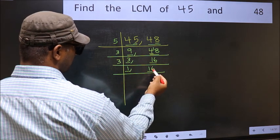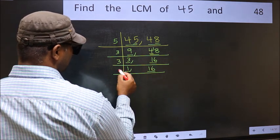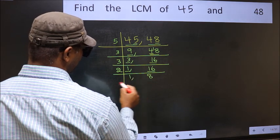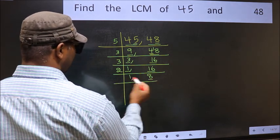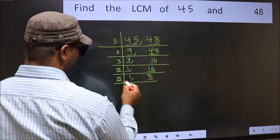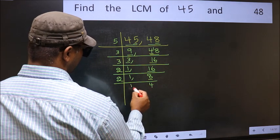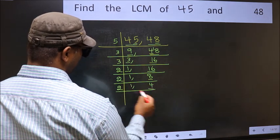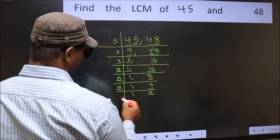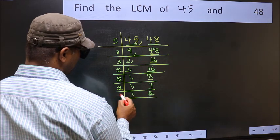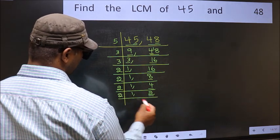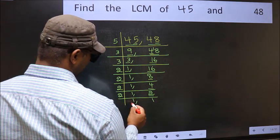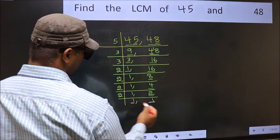So focus on to the next number 16. 16 is 2 eights — 16. Now we have 8. 8 is 2 fours — 8. Now we have 4. 4 is 2 twos — 4. Now we have 2. 2 is a prime number, so 2 ones are 2. We got 1 in both places.